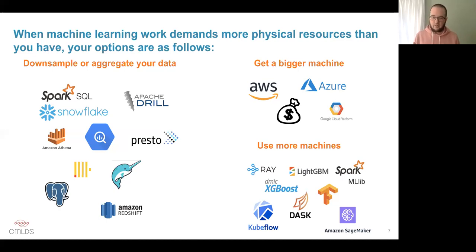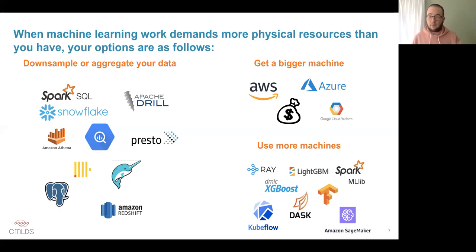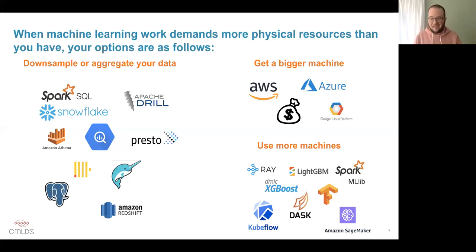Finally, you have the option to use multiple machines. Putting together four or five machines with the same physical resources as one larger one might be cheaper, because many frameworks for using multiple machines have features like adaptive scaling or auto-scaling — adding and removing machines as the demand of your workload changes. General frameworks for this include Dask, Ray, Apache Spark, and Kubeflow. Some machine learning frameworks also have their own multi-machine implementations, like XGBoost, LightGBM, TensorFlow, and PyTorch.